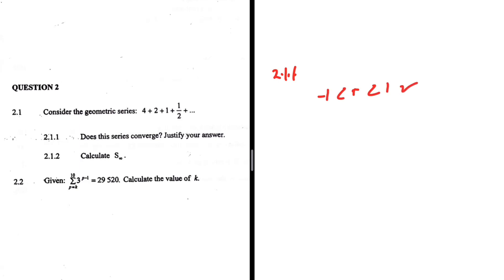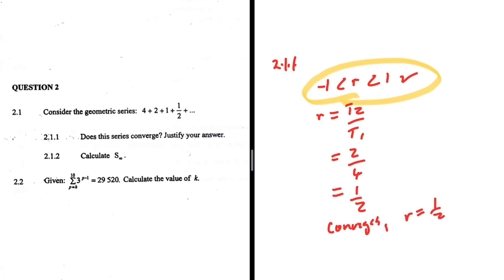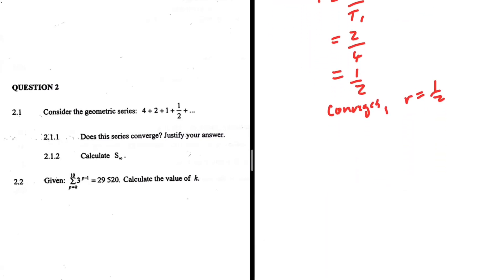When r is between minus 1 and 1, the series converges; otherwise it diverges. We find r by calculating t2 divided by t1. So r equals 2 divided by 4, which is a half. Since a half lies between minus 1 and 1, this series converges. It converges because r equals a half, which is between minus 1 and positive 1.